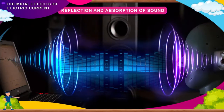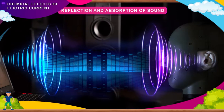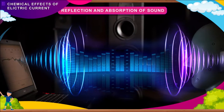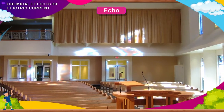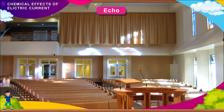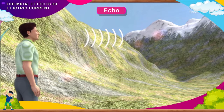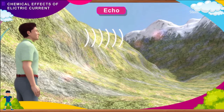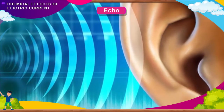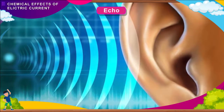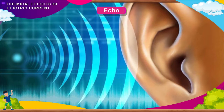Sound can be reflected and absorbed, and these properties have many applications. Echo is a reflected sound. The bouncing of sound is like a ball bouncing back from a wall. Although sound is reflected all the time around us, we cannot hear an echo at all times. It happens only when we are at a certain distance from the reflecting surface. Our ears can hear an echo only if it reaches our ears about one-tenth of a second after the first sound is produced.